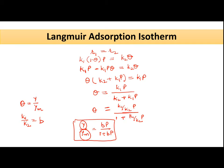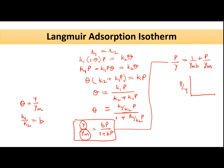Where y is the mass of gas adsorbed per gram of adsorbent, and ym is the mass of gas that one gram of adsorbent can take up when a monolayer is complete. Rearranging by inverting and multiplying by p: p/y = (1/ym)·p + (1/(b·ym)). So if you plot p/y versus p, from the curve you can get the value of 1/ym (or ym) and b.